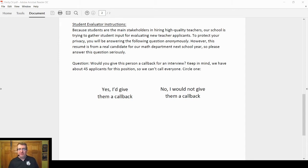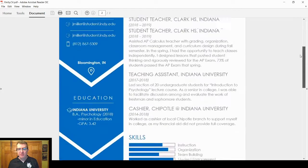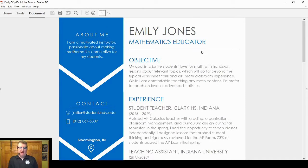The first one, and so usually there's two of them, and we say that they're given up to half the class will get one set, half the class will get the other. So here's Emily Jones, about me, objective experience, blah, blah, blah.